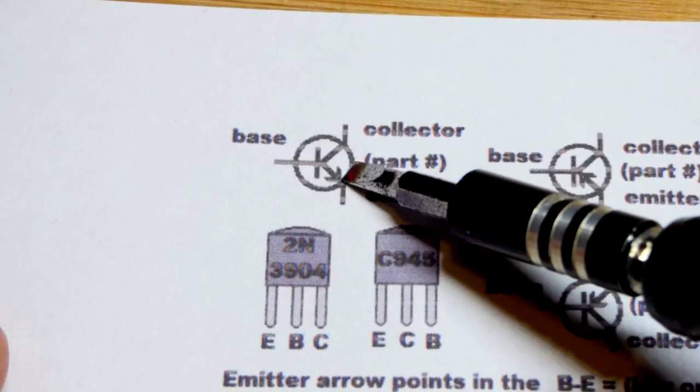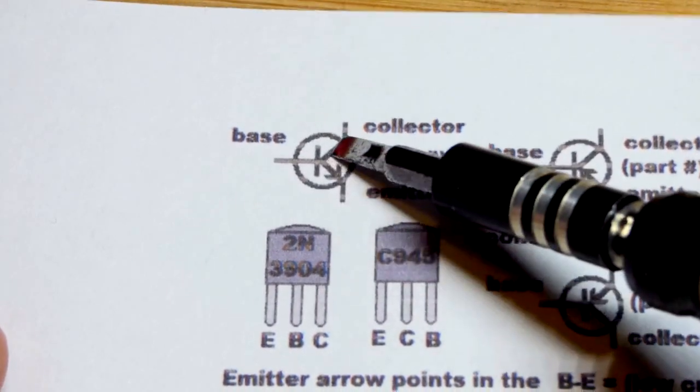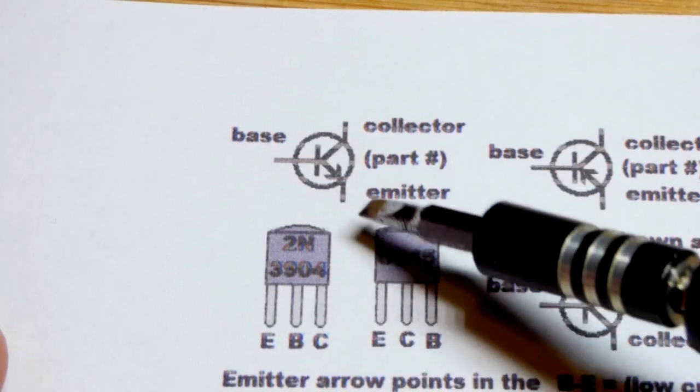So you can think of NPN if you look at this arrow, it's not pointing in. The arrow is pointing out. So that's how you know it's an NPN bipolar junction transistor.